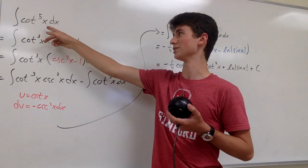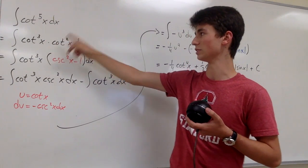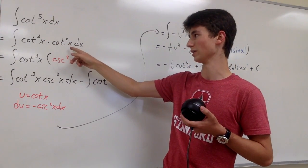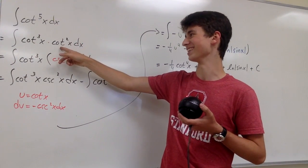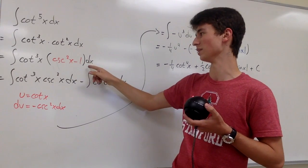So we're going to start by splitting the cotangent to the fifth of x into cotangent cubed times cotangent squared, and then we can use the identity that cotangent squared of x is equal to cosecant squared of x minus one.